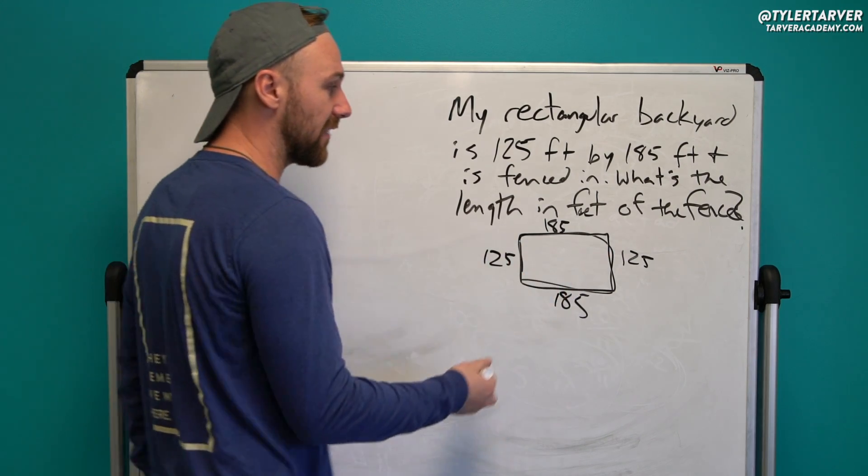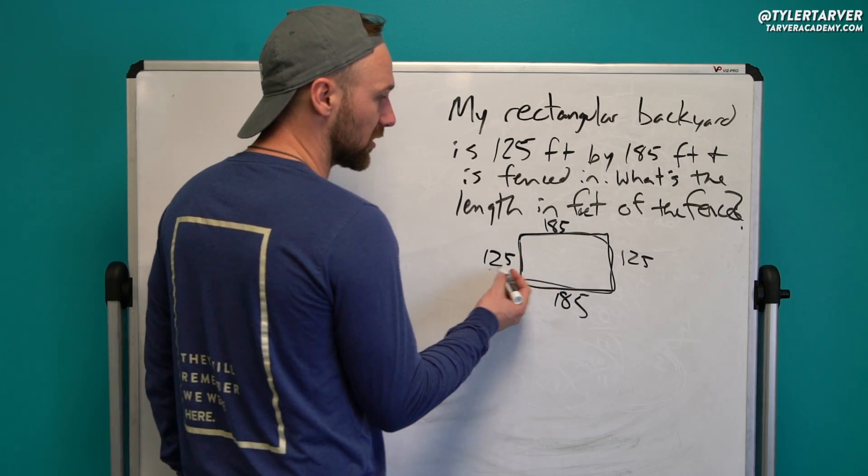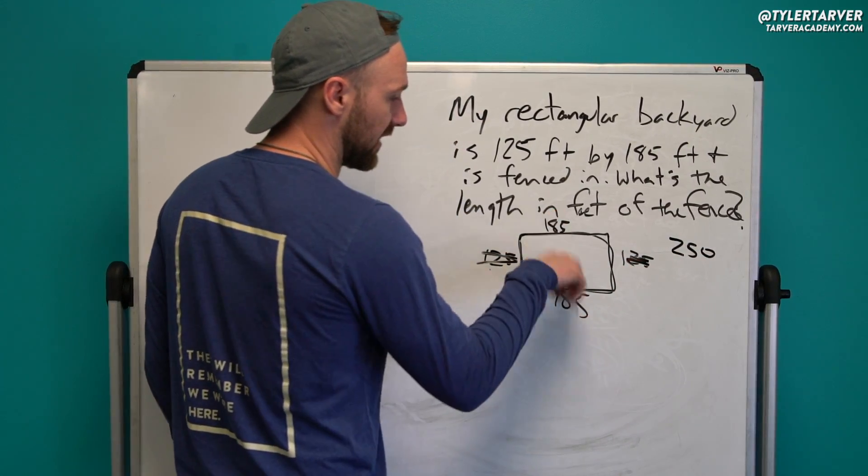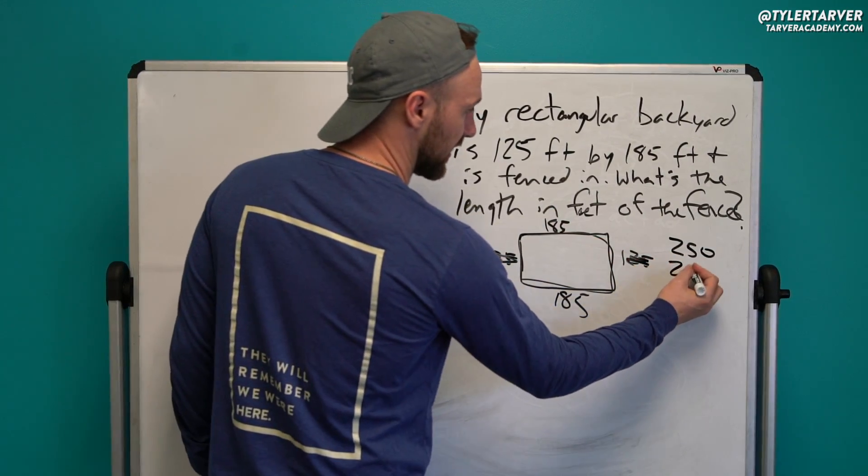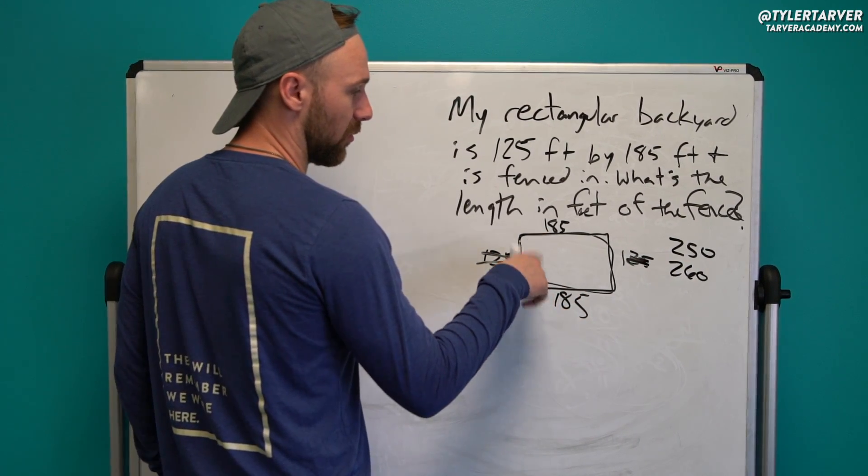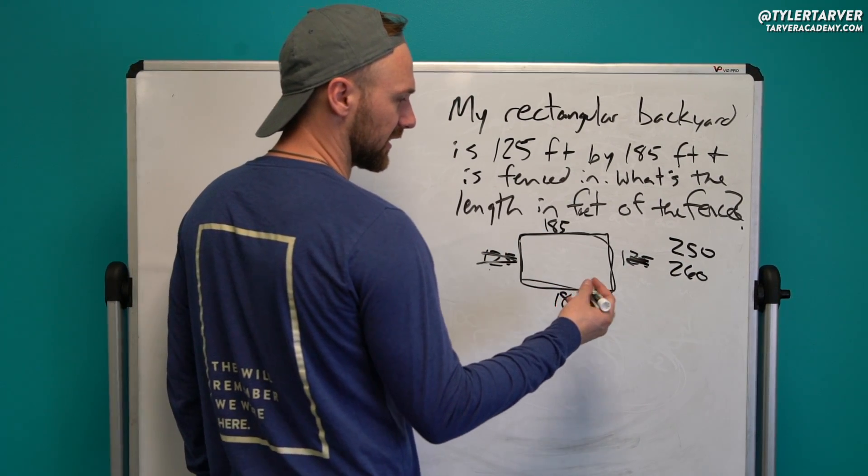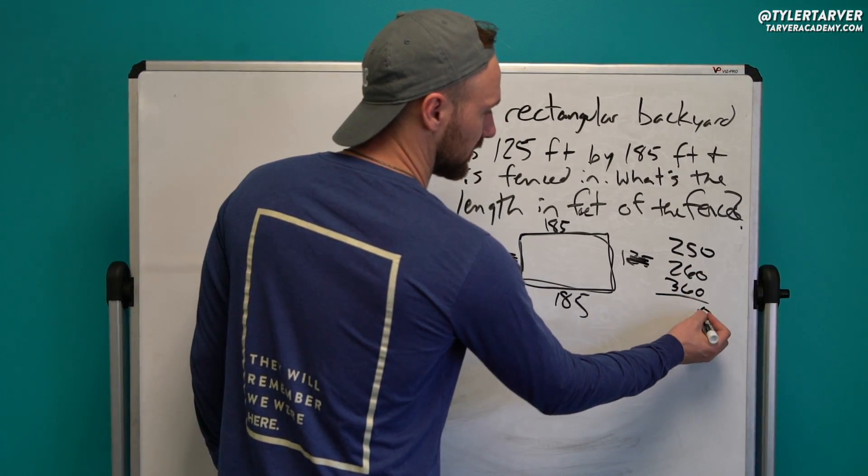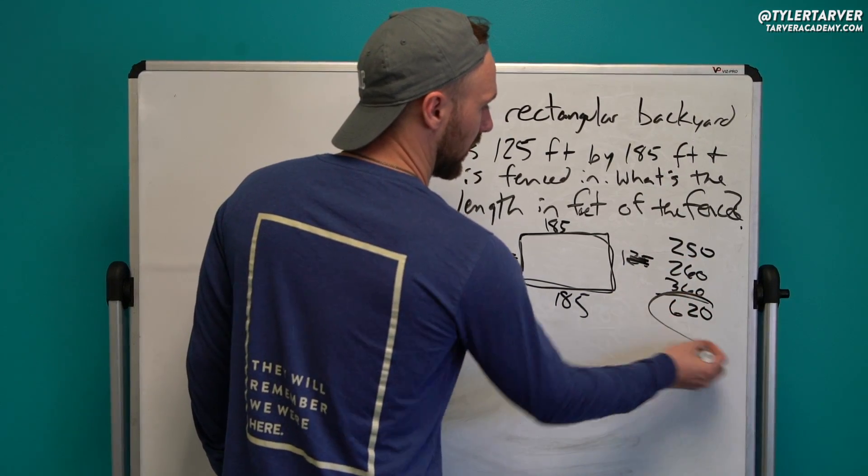So all I'm going to do is add these together. So I've got 125 plus 125. That's an easy one. It's 250. And then I can add these together. I'll add the fives. That's 260. And then 180 plus 180 is 360, I believe. Yeah, it's 360. So I'm going to add those two together. So 0, 2, 1, 6, 20 feet.